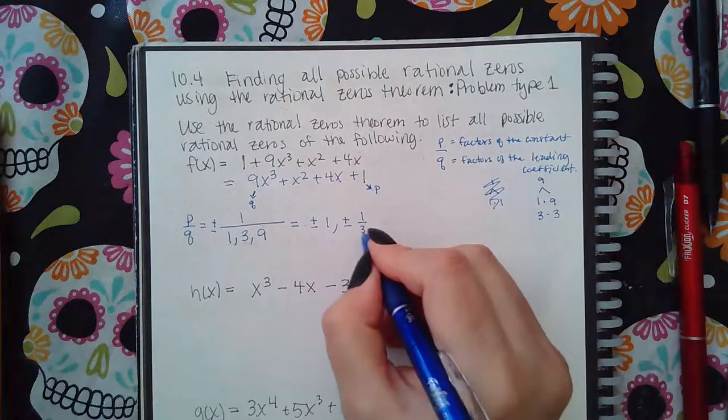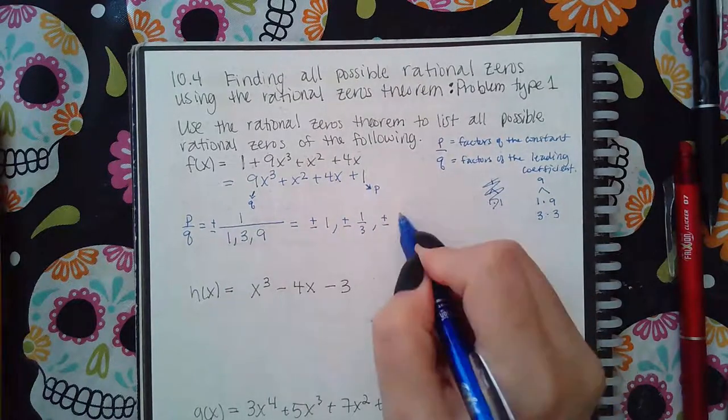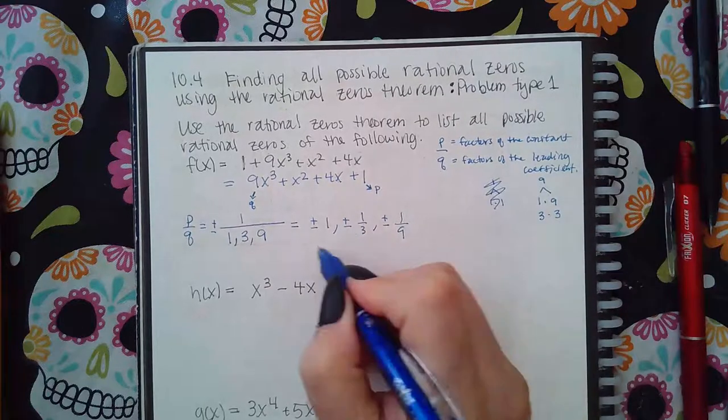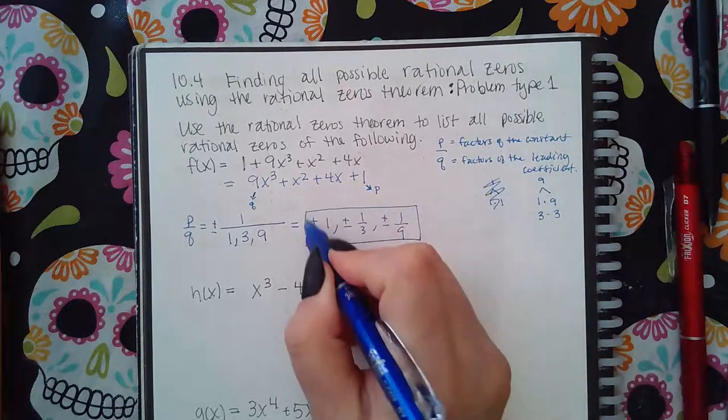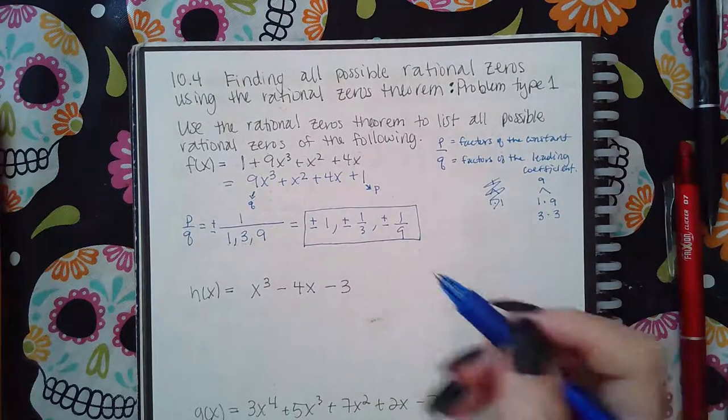plus or minus 1 over 9, which is 1 ninth. And this is the list. So there are actually six numbers in this list.